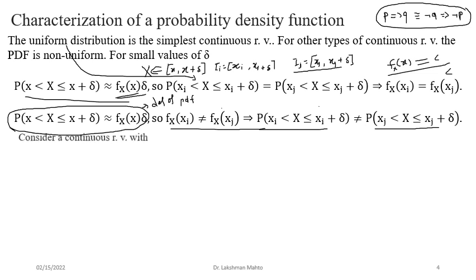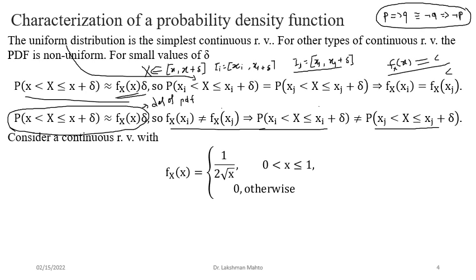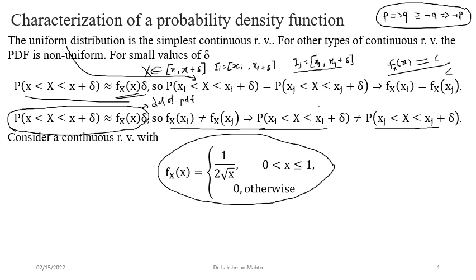As an example, consider a continuous random variable with a given non-uniform probability density function. We can see it is a function of x — as x varies, the density varies — so it is not constant and hence non-uniform. We must first validate whether this function is a legitimate PDF by verifying all three properties of being a PDF. The function is f(x) = (1/2)√x for x in [0,1], and 0 otherwise.